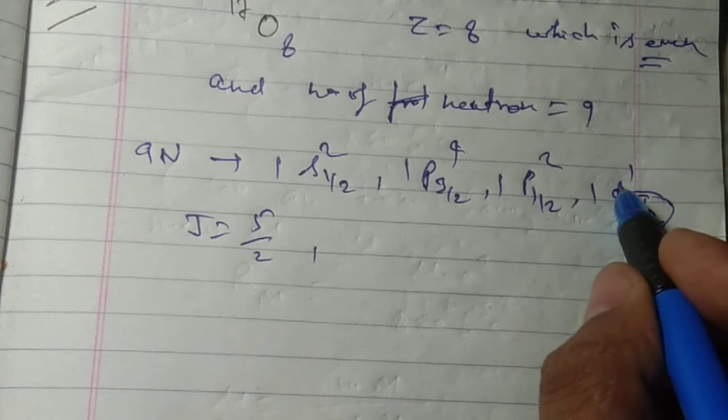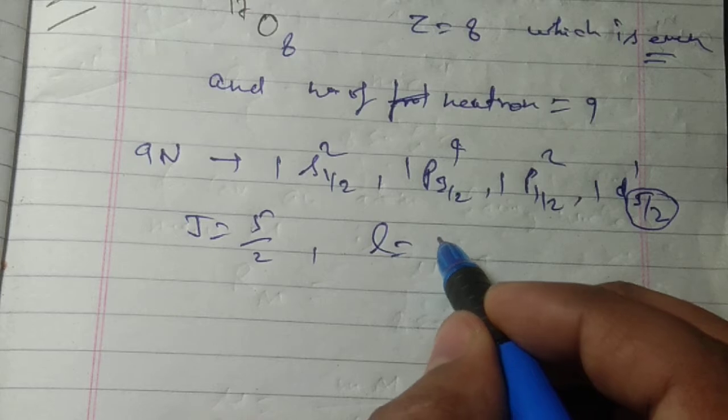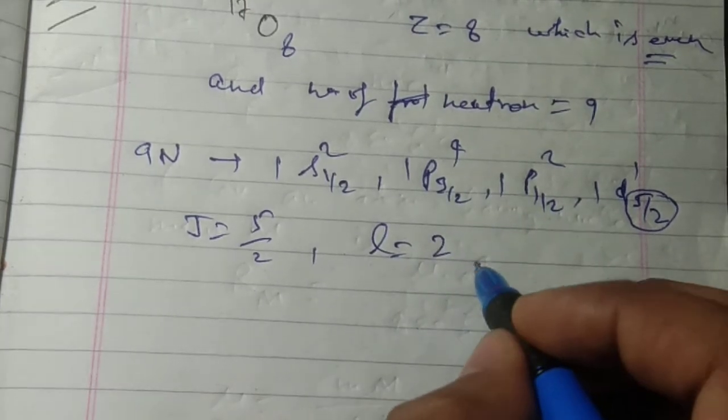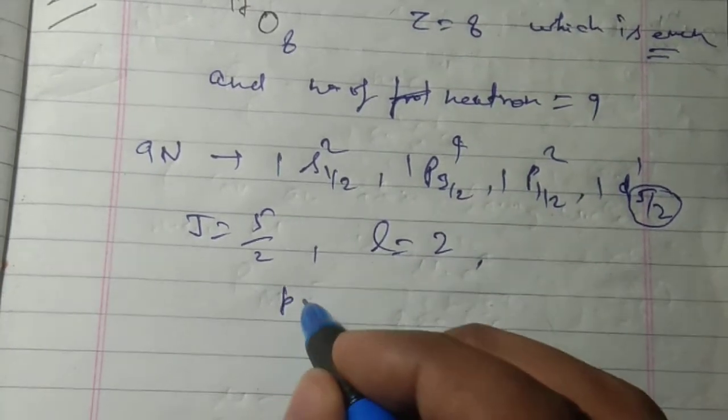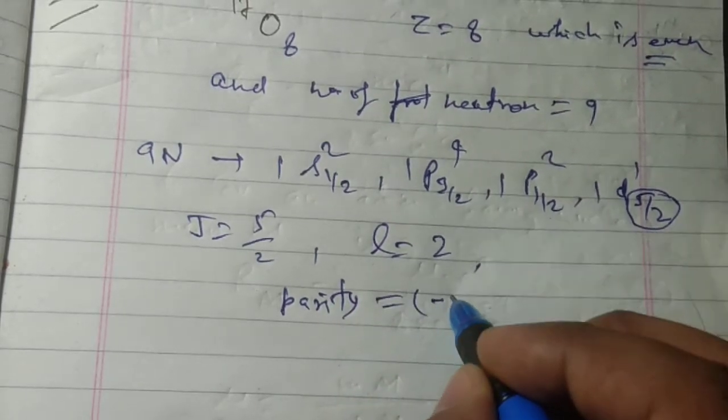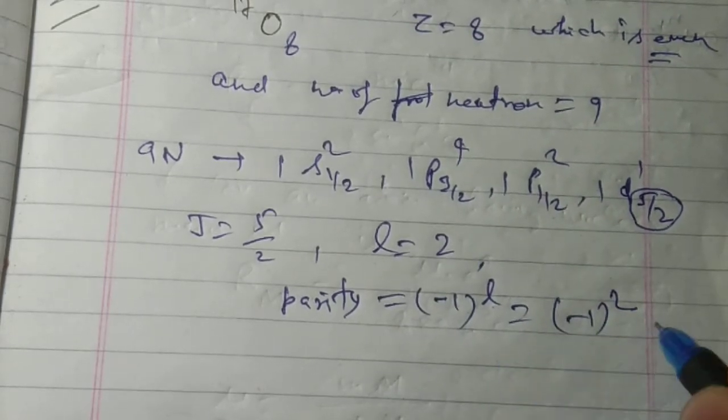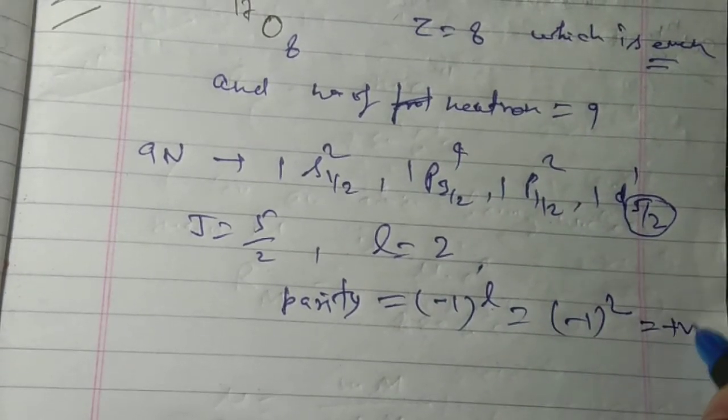The last neutron is in the d orbital, so for d, l equals 2. Parity equals (-1)^l, which is (-1)^2, which equals positive.